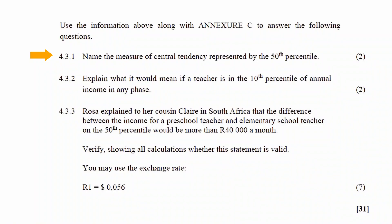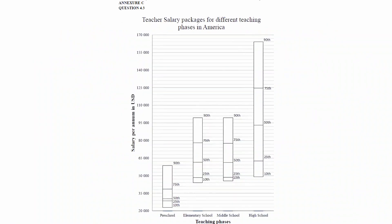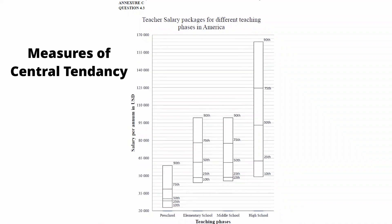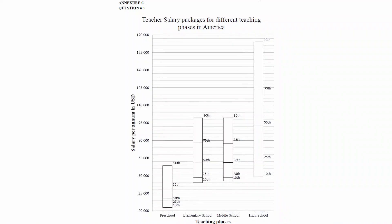In question 4.3.1 you have to name the measure of central tendency represented by the 50th percentile. The 50th percentile is indicated by the middle lines on the box and whisker plots. There are three measures of central tendency in mathematical literacy: the mean, median, and mode. For box and whisker plots, the 50th percentile is also known as quartile 2, or the median.